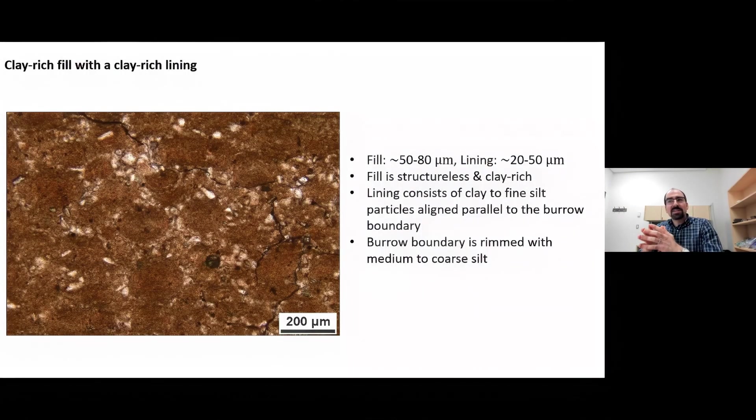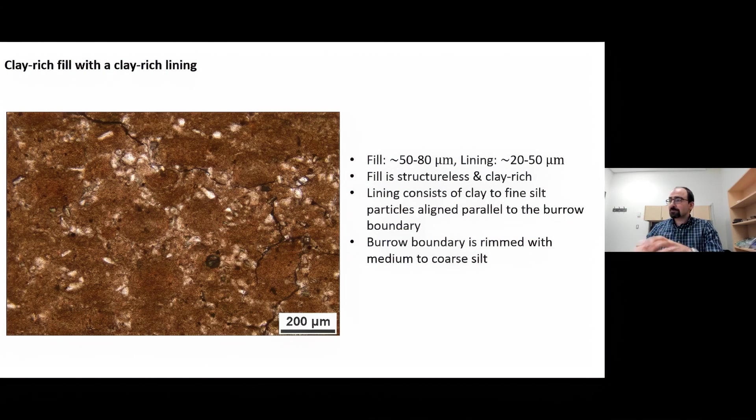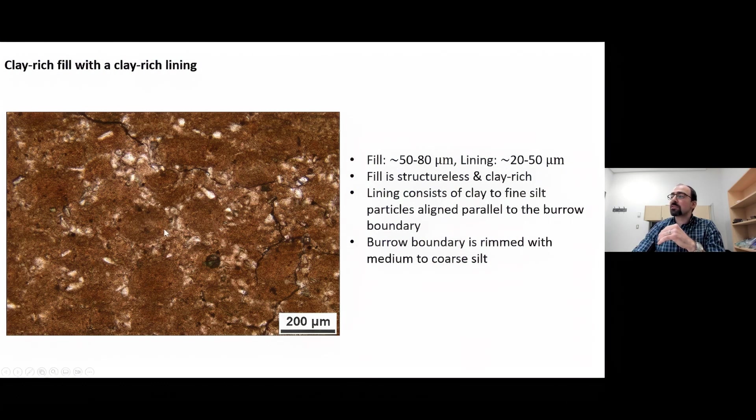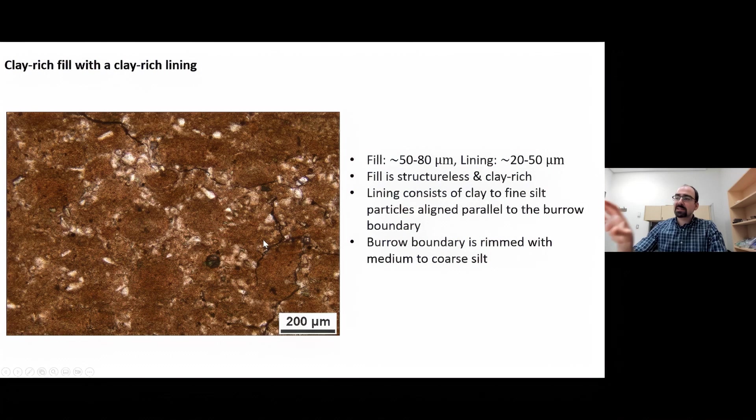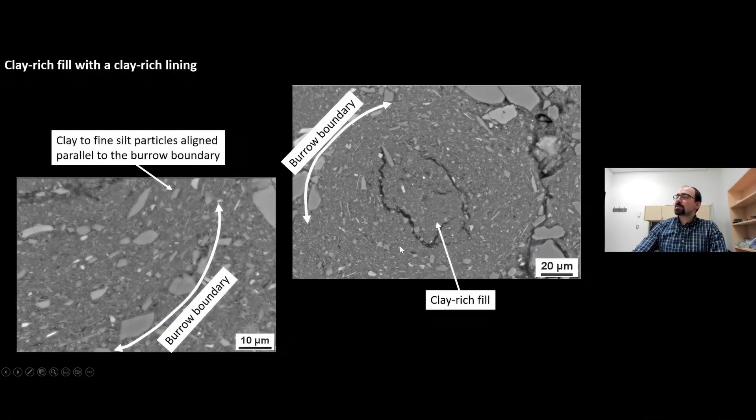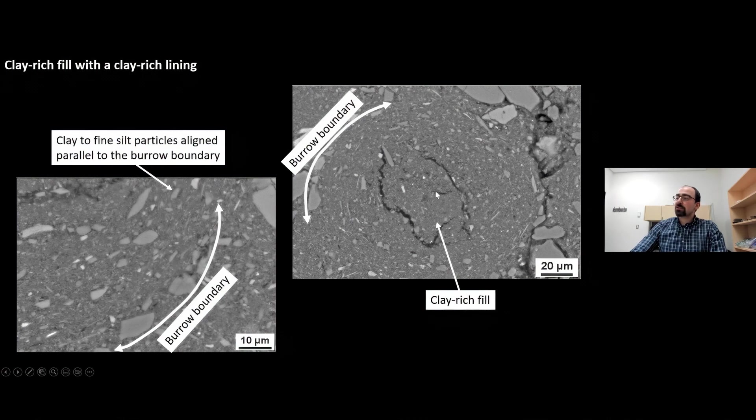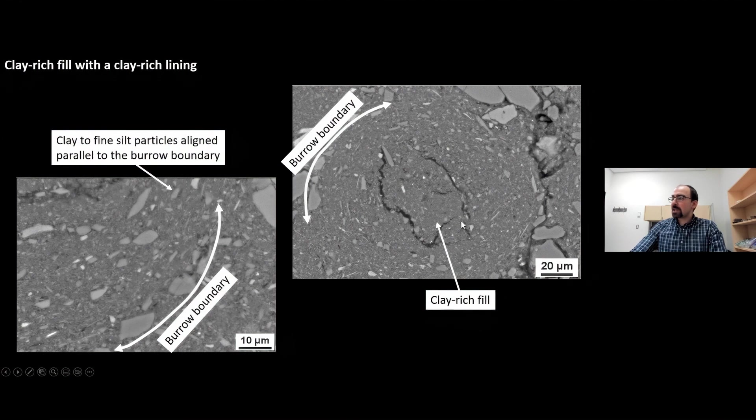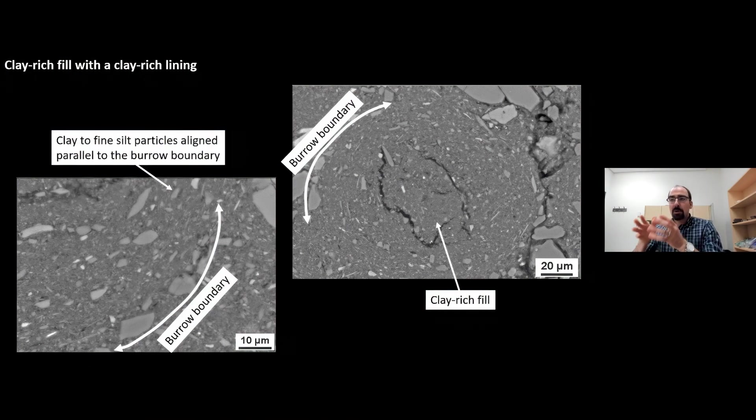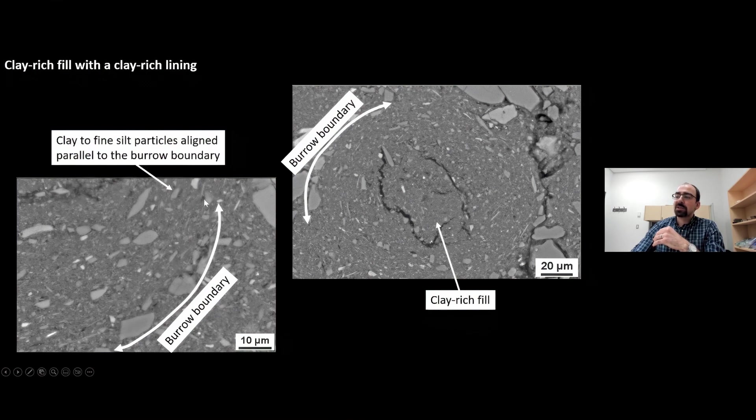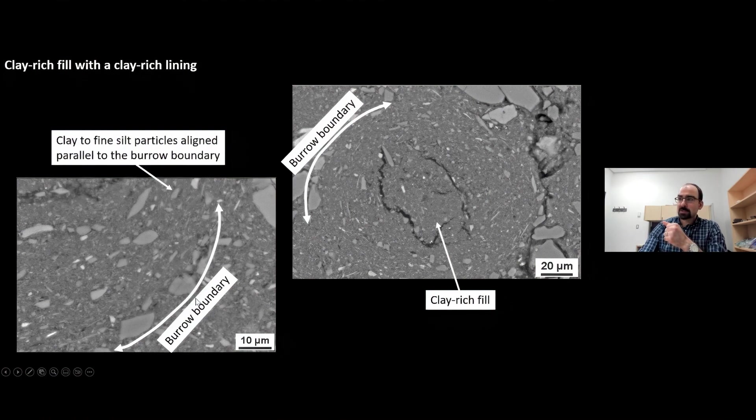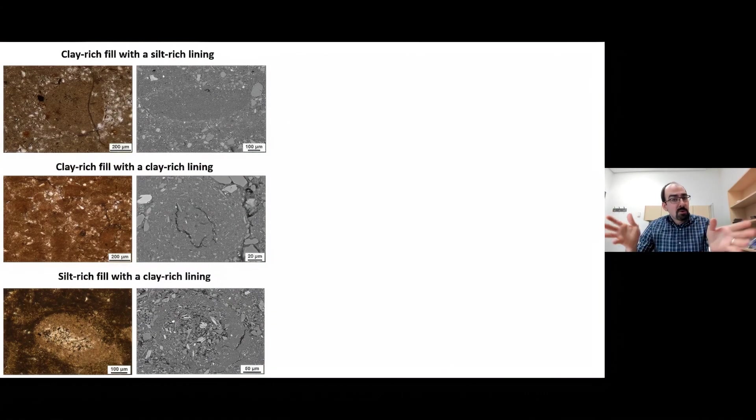The third type of burrow fill recognized is a clay-rich fill that has a clay-rich lining. It's difficult to determine the fabric at the optical microscope scale, but the fill is structureless, it's clay-rich. The lining consists mostly of clay to fine silt. This photomicrograph shows a dense assemblage of this type of burrow fill. At the SEM scale, you can see the structureless nature of the clay-rich fill. The fills are only a few tens of micrometers in diameter marked by a clay to very fine silt-sized lining of which the particles are aligned parallel to the burrow boundary. The burrow boundary is in turn marked by medium to coarse silt-sized sediment.